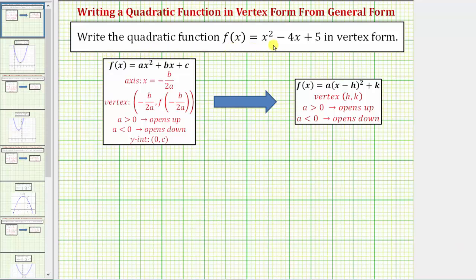We're asked to write the quadratic function f of x equals x squared minus four x plus five in vertex form. Notice how the given quadratic function is in the form f of x equals ax squared plus bx plus c. This is often referred to as general form or standard form.